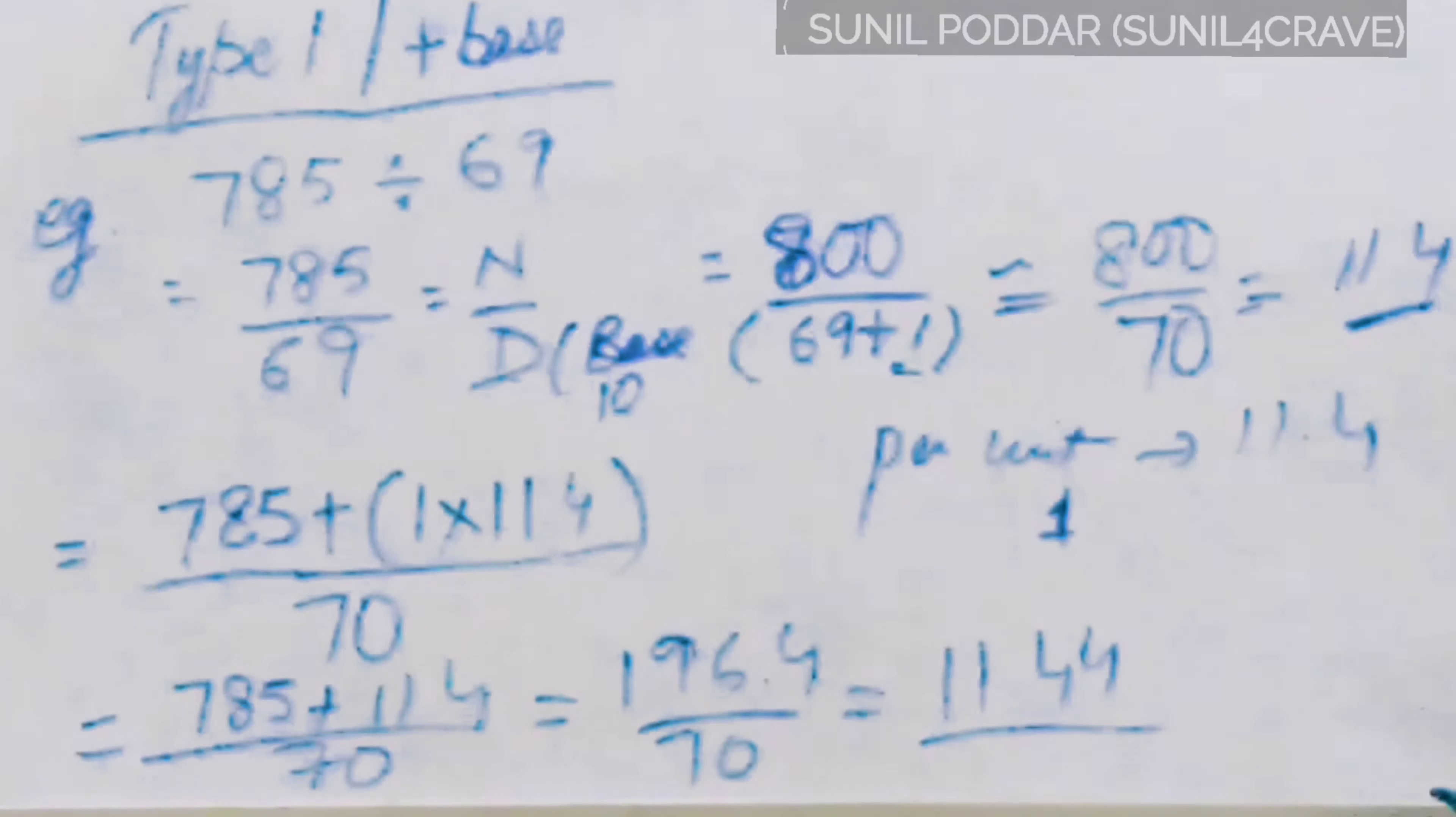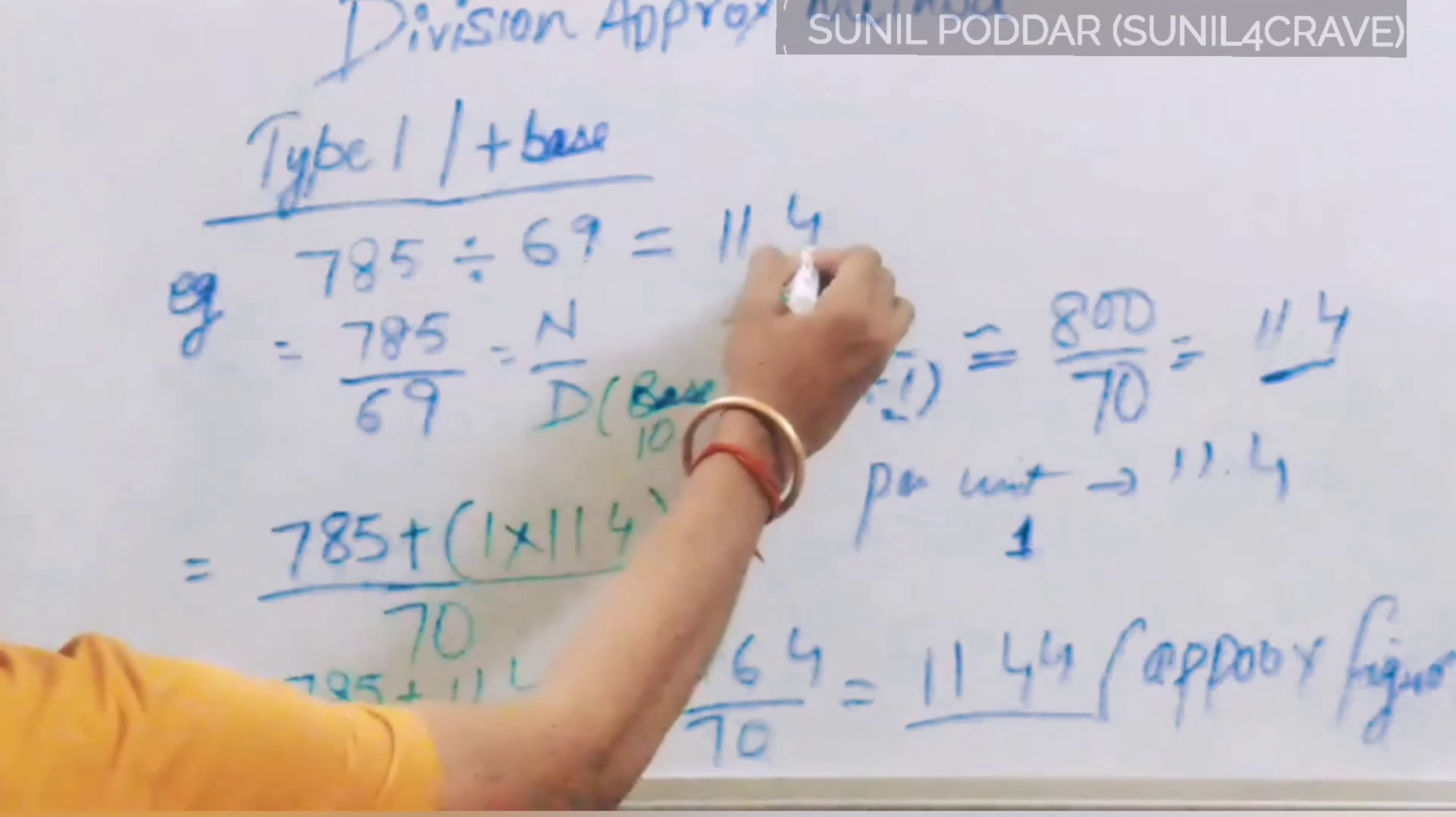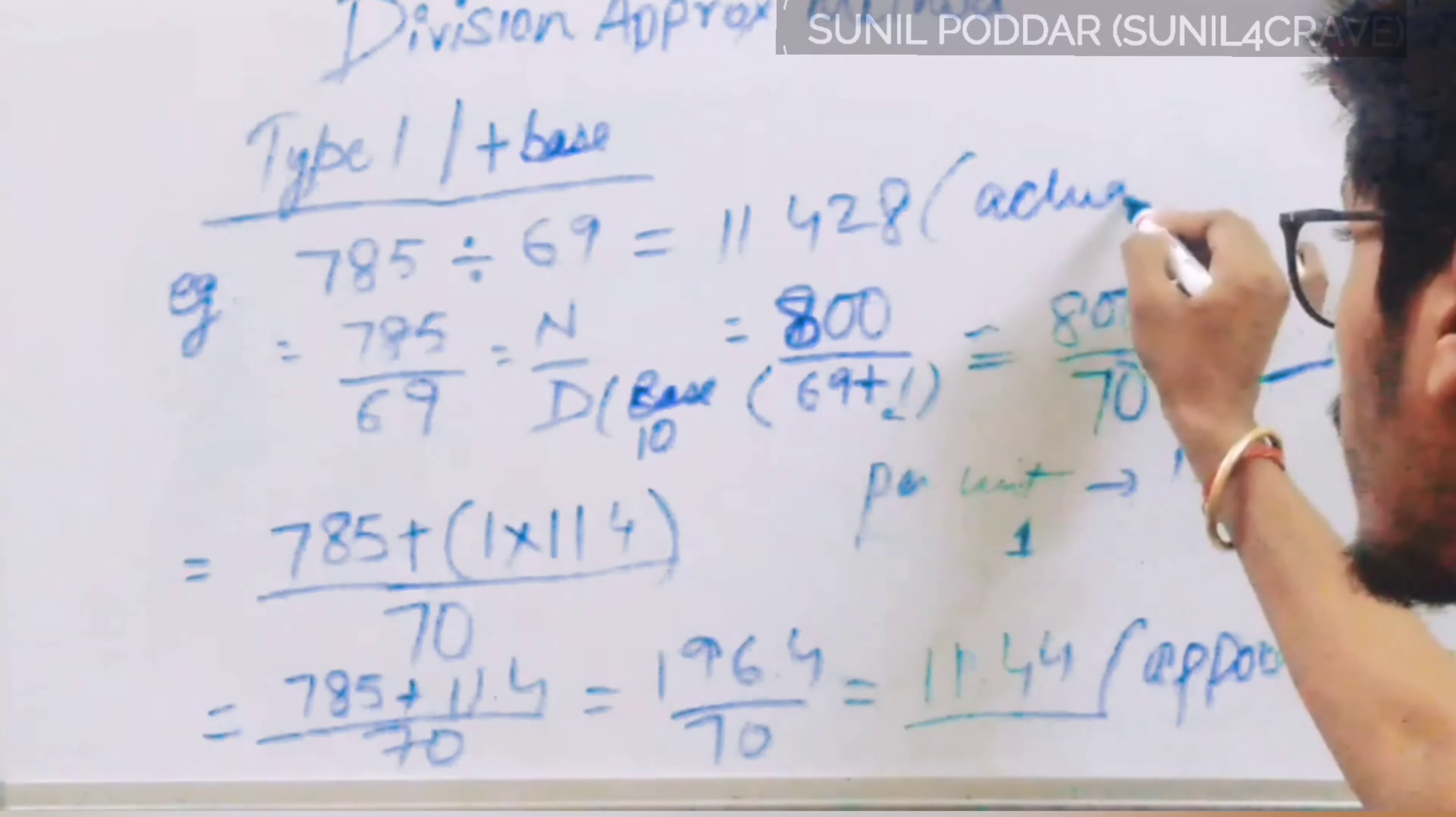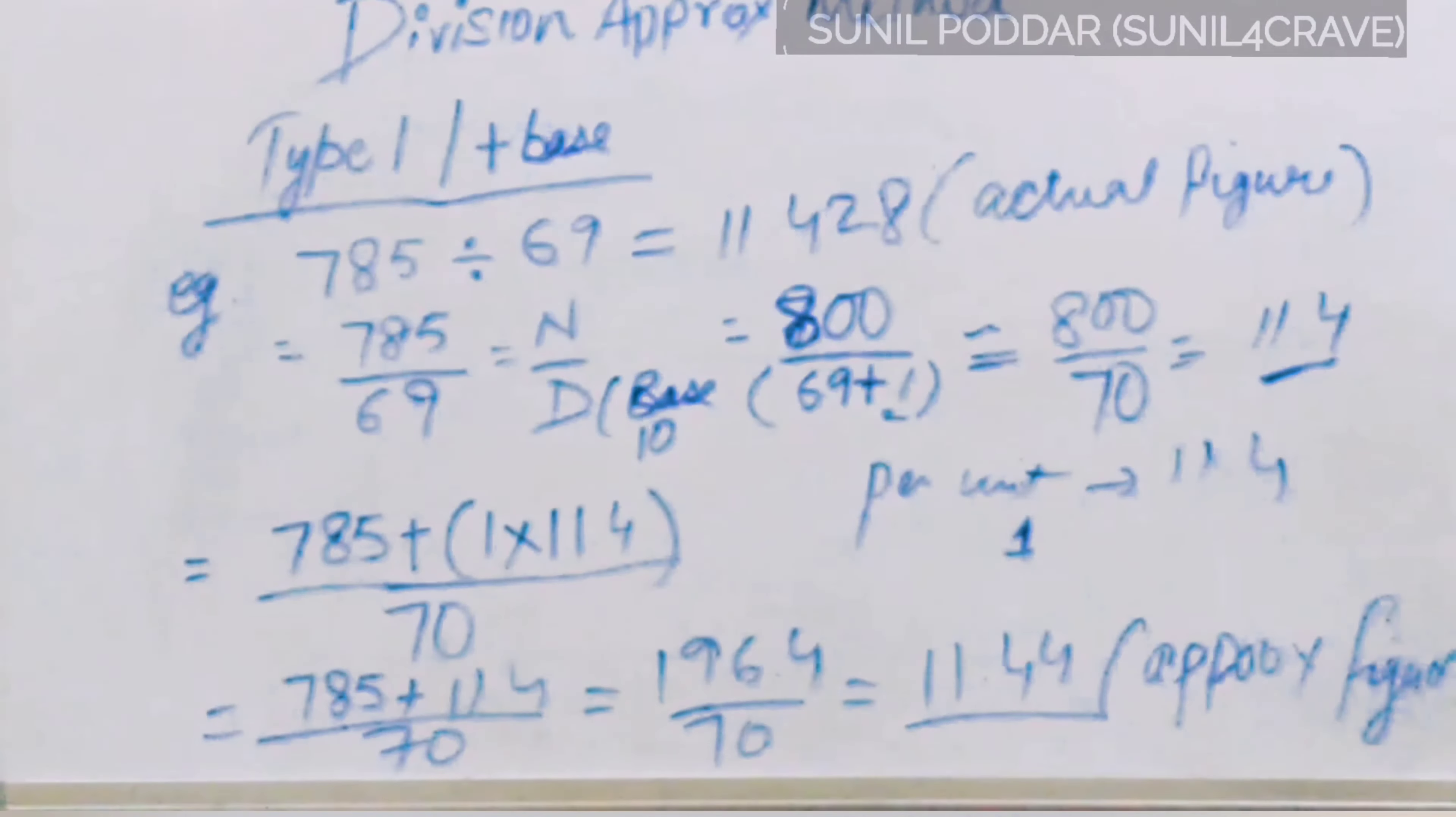It is our approximate figure. Let's check what the answer will come out when we calculate 785 divided by 69. It is 11.428. This is our actual figure, and this is our approximate figure. You noted it.